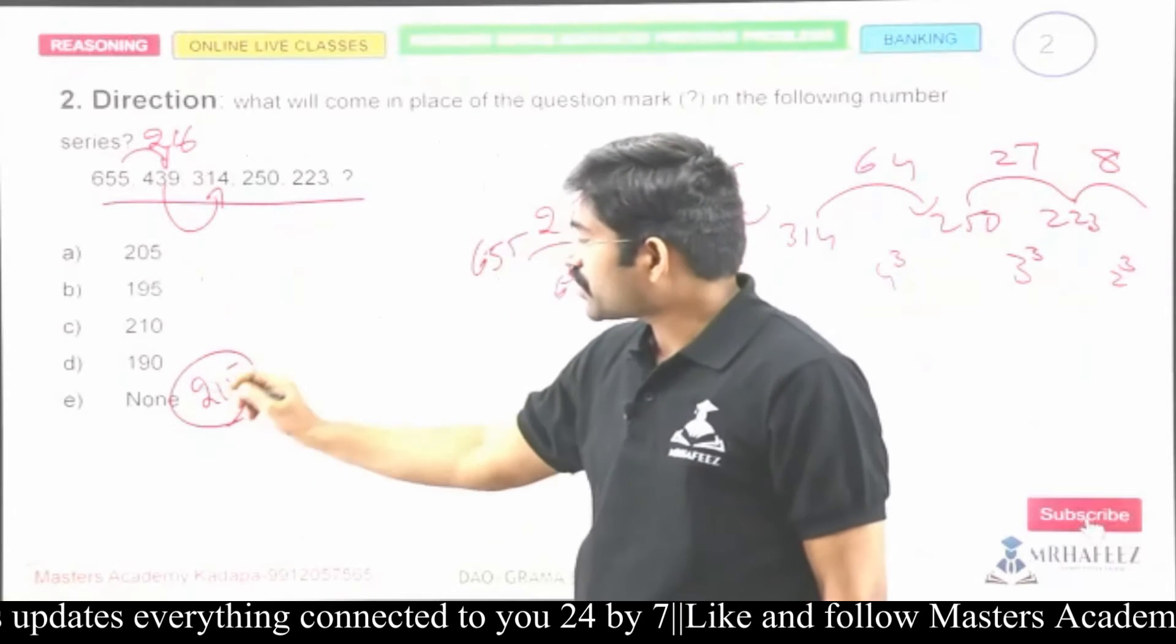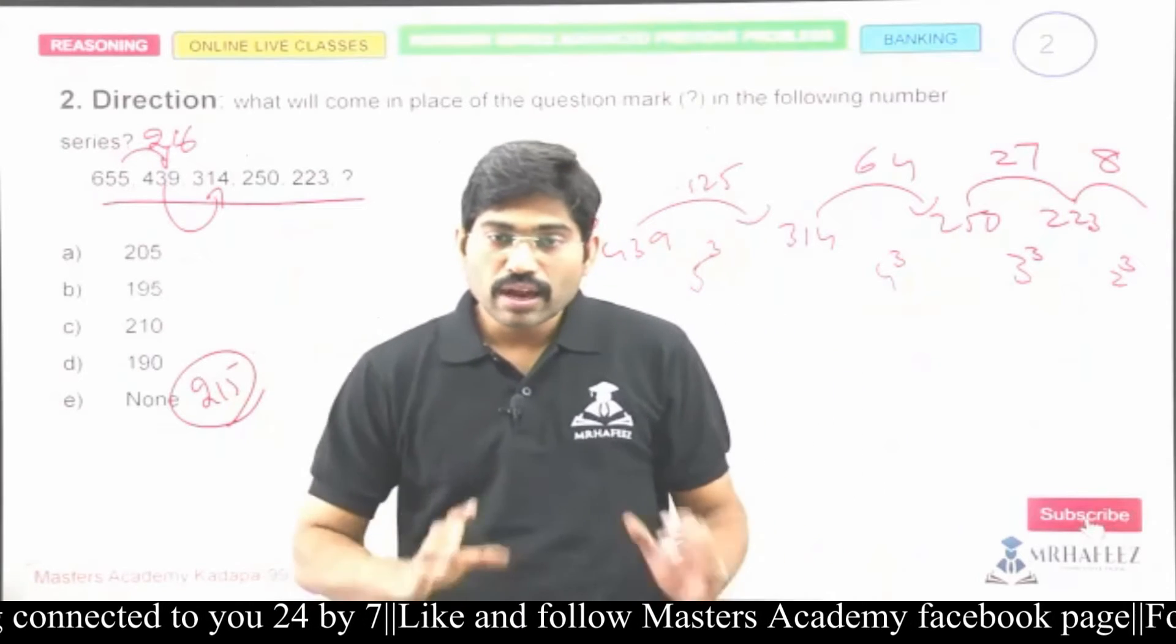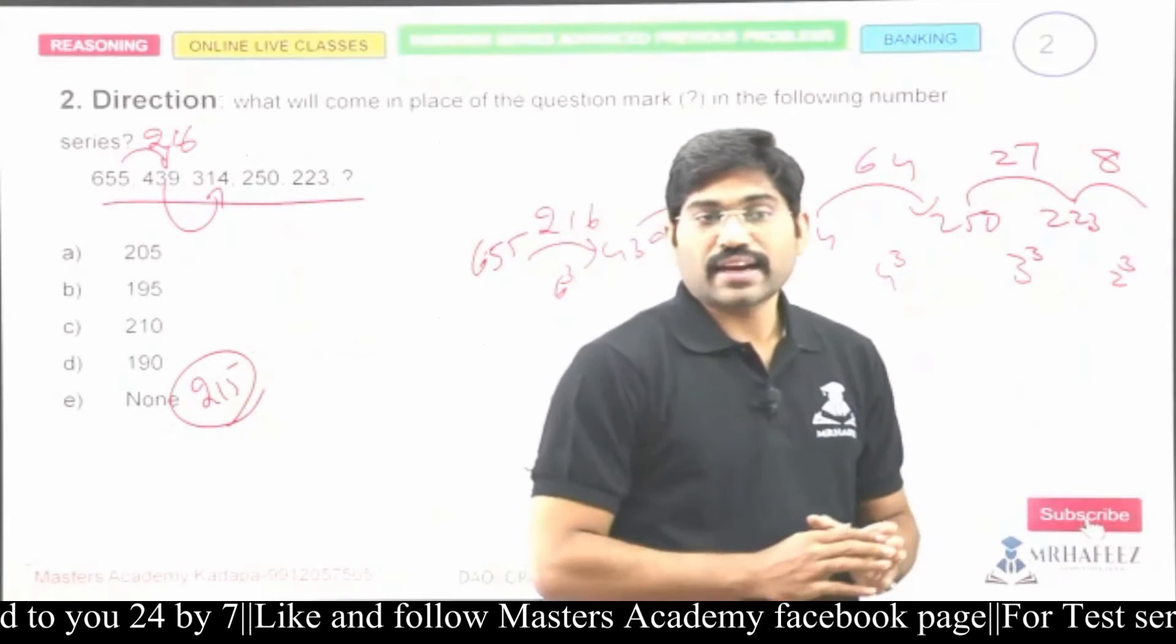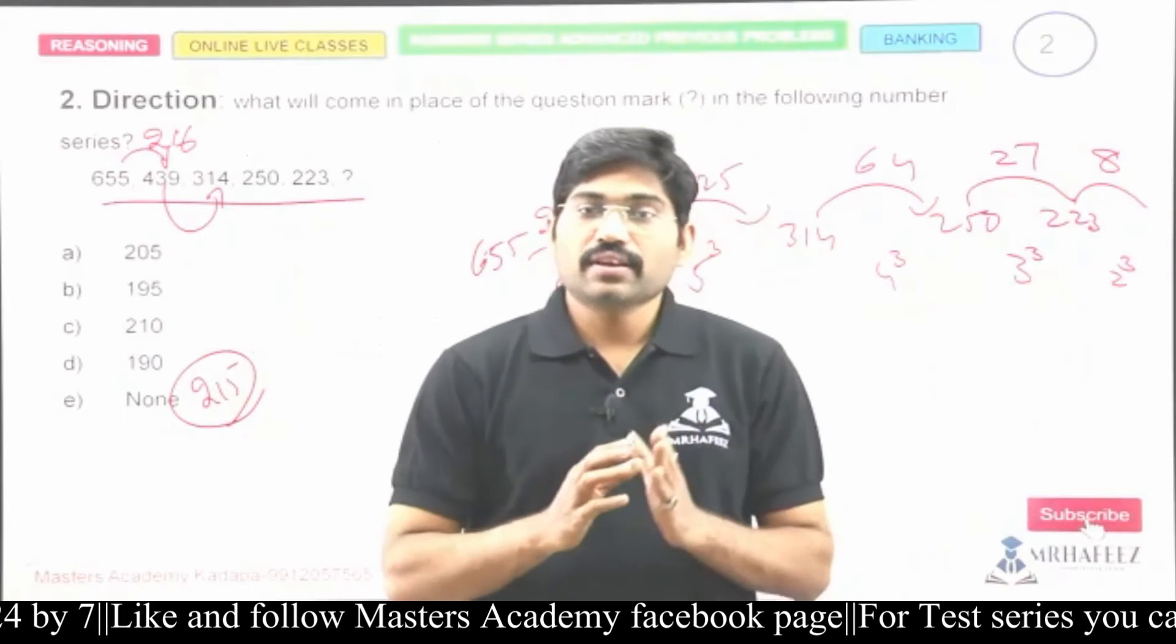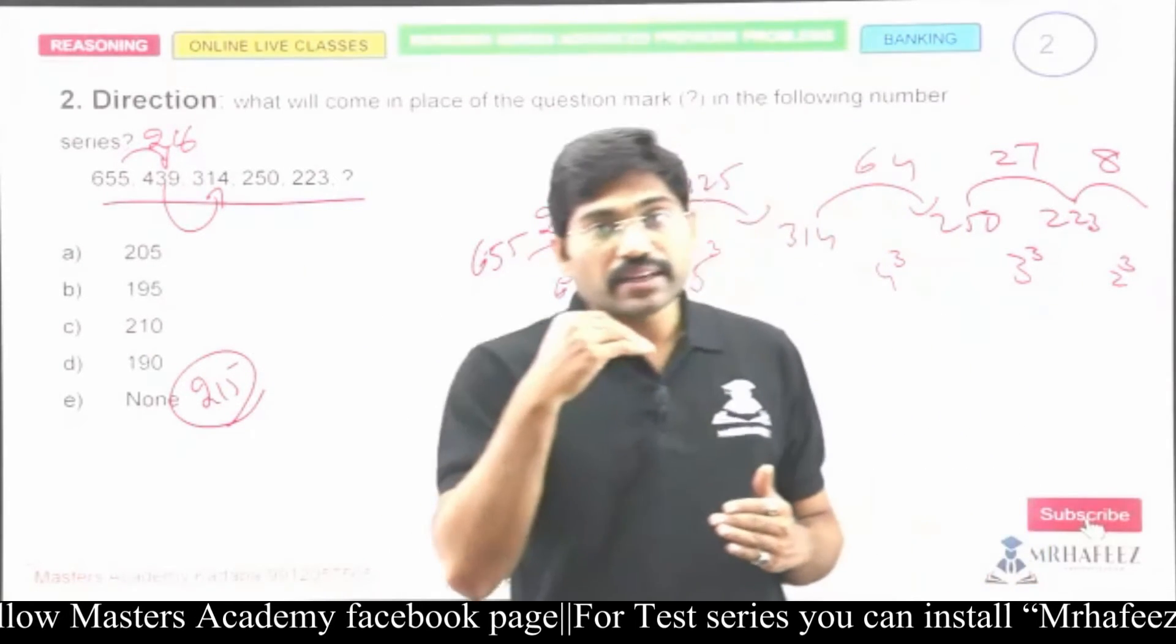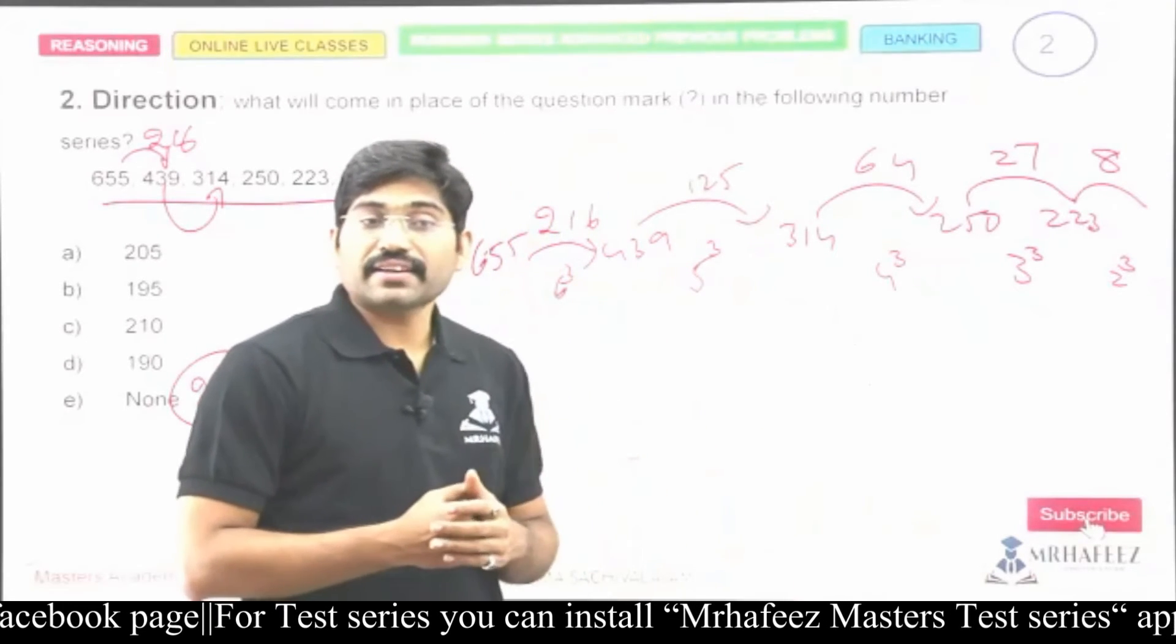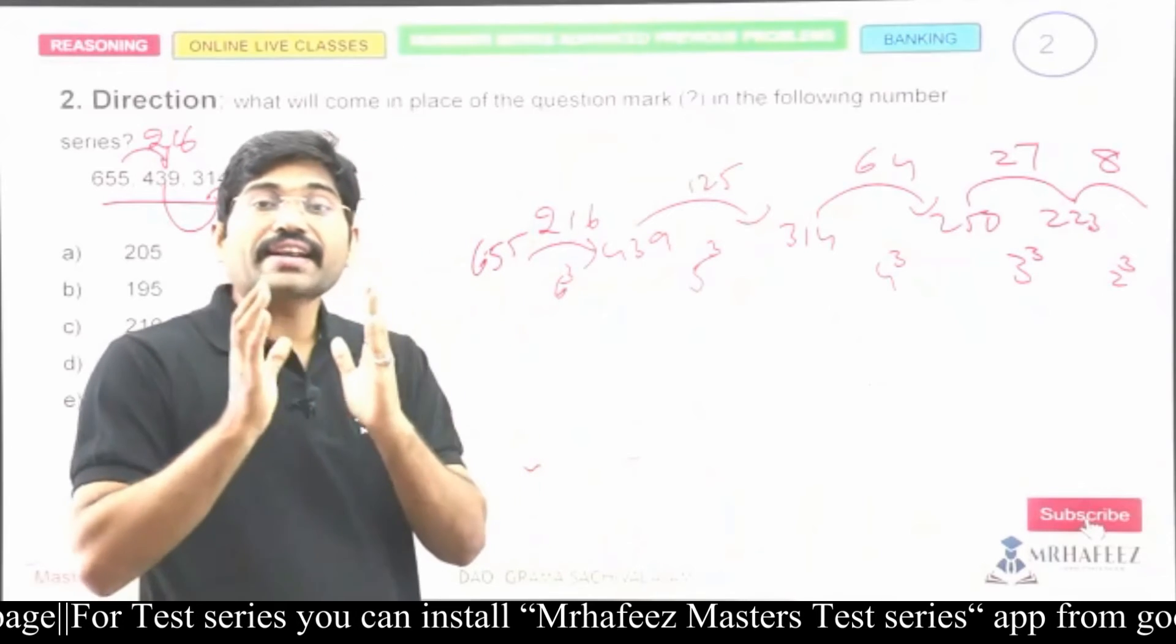Even if the answer is not in the options, we can find out the actual answer if you know the logic. So identify the logic first. Identify which type it is - whether it's multiplicative, division, or addition. That can be identified by observing the numbers.